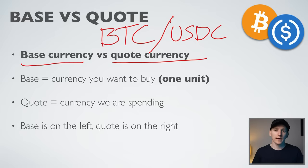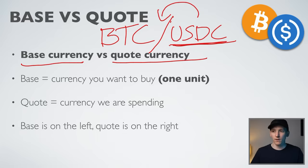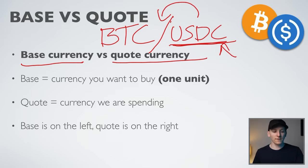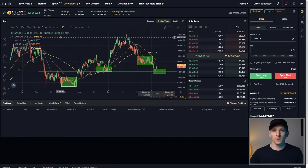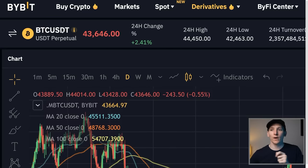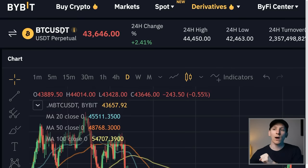The quote currency on the right is the amount you have to spend to buy one unit of the base. On Bybit, in the top left you can see the currency quote — BTC/USDC. The base currency is Bitcoin (one unit of Bitcoin on the left), and on the right it tells me how many USDT it takes to buy one unit: 43,646.50. That's the price of Bitcoin.